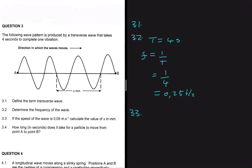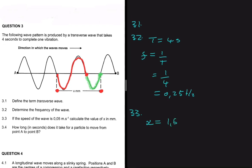Question 3.3 states that the speed of the wave is 0.05 meters per second and asks us to calculate the value of x in millimeters. Looking at x on the diagram, from this point to this point, we can identify that x spans one full wavelength and then half a wavelength, so x equals 1.5 wavelengths.